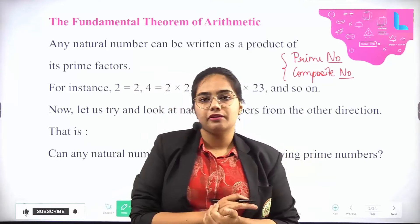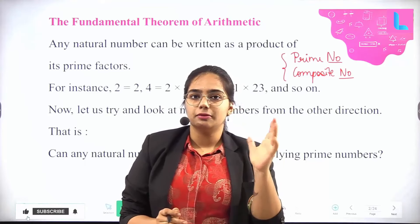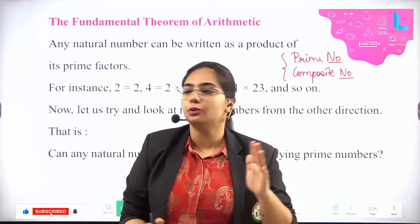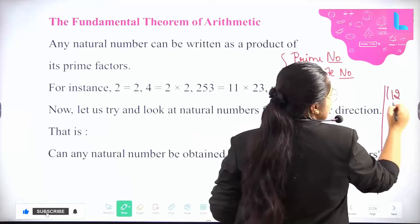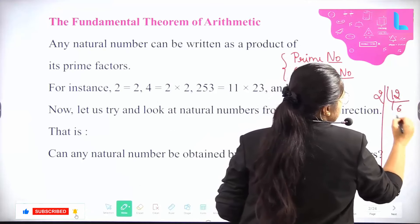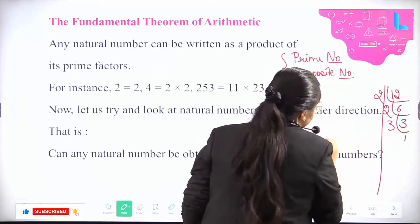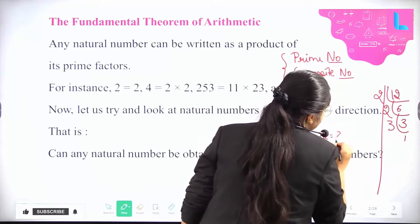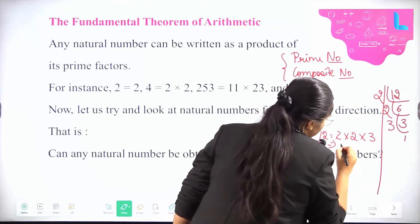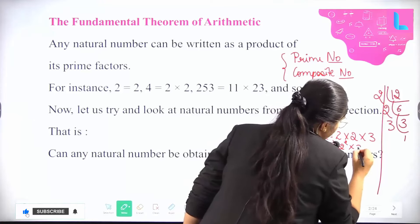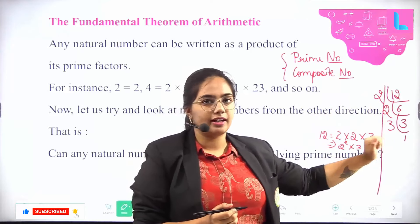So what is the Fundamental Theorem of Arithmetic? In previous classes you will have solved the prime factorization method. Suppose the number is 12: you divide — 2 goes 6 times, then 2 goes 3 times, then 3 goes 1 time. So you represent 12 as 2 × 2 × 3, which can further be written as 2² × 3. This is how you represent any number by prime factorization.